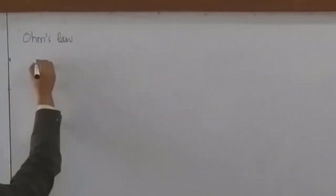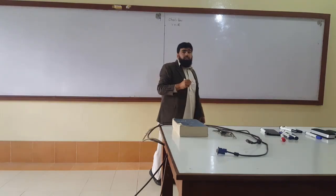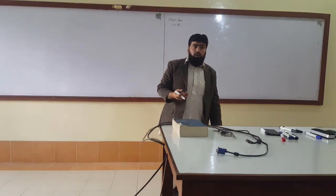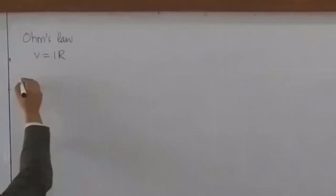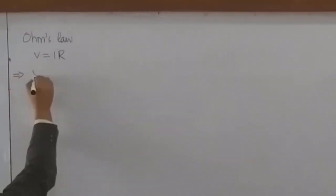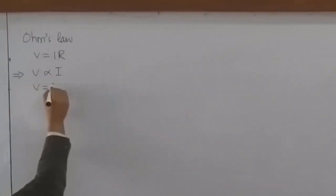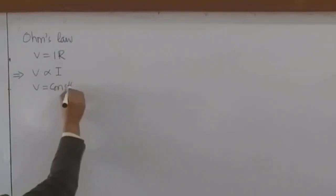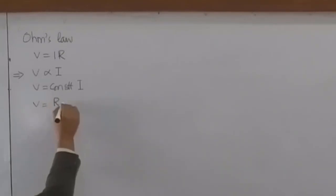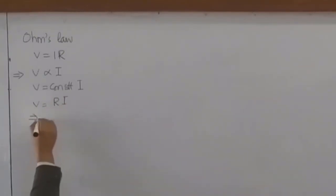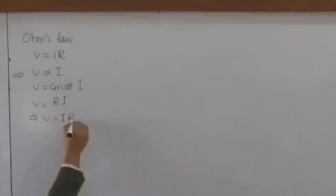Ohm's law is written as V equals IR. If I write this as V proportional to I, then V is equal to a constant times I, and this constant of proportionality is R. So this will make our equation V equals IR.